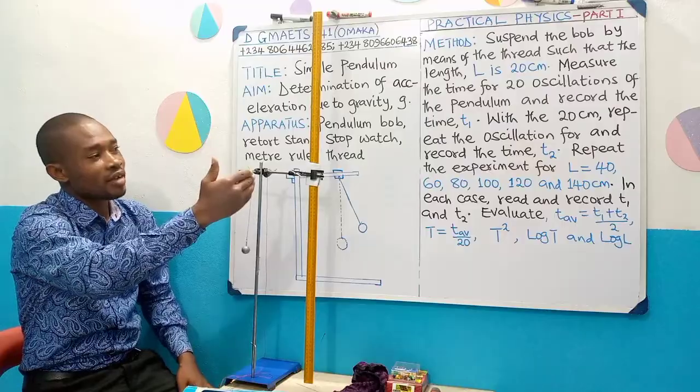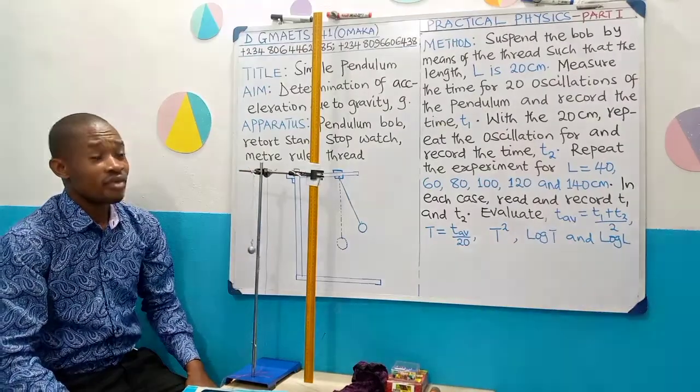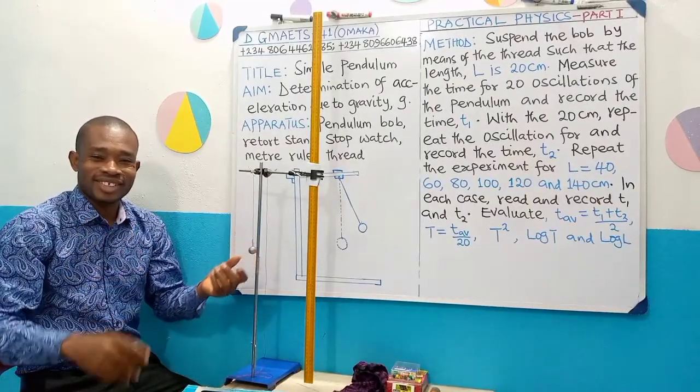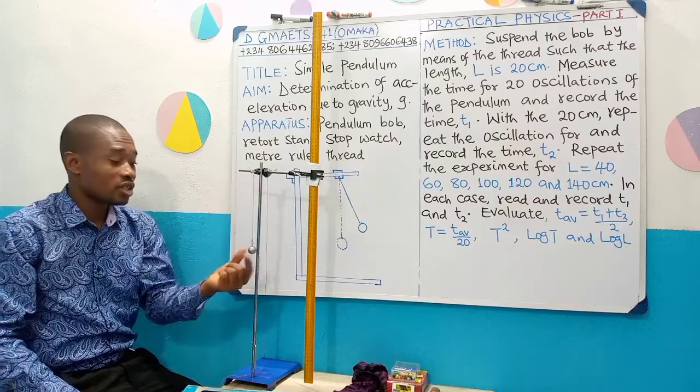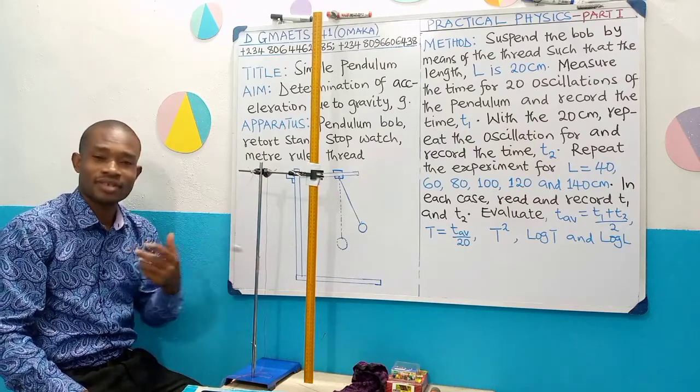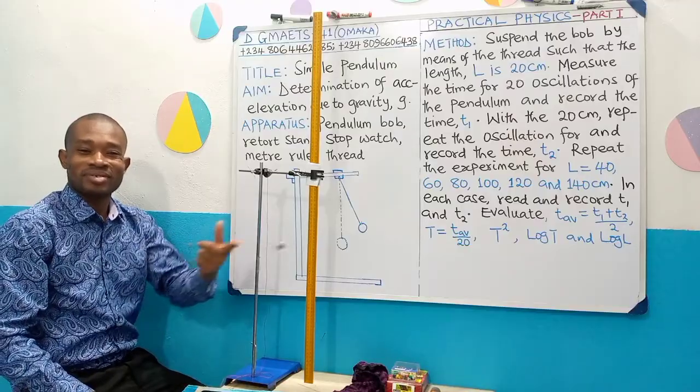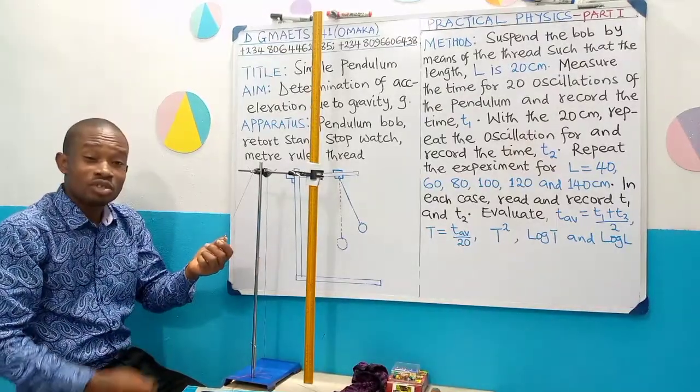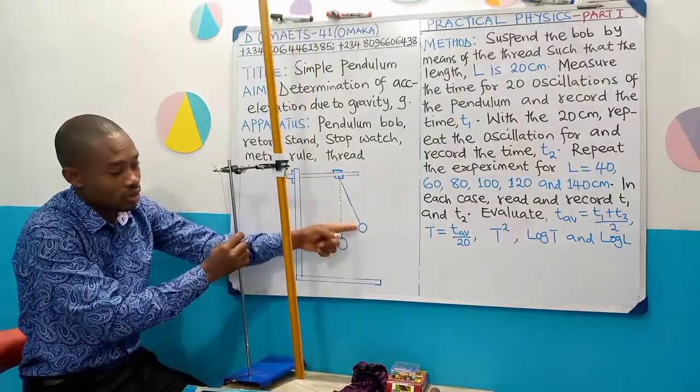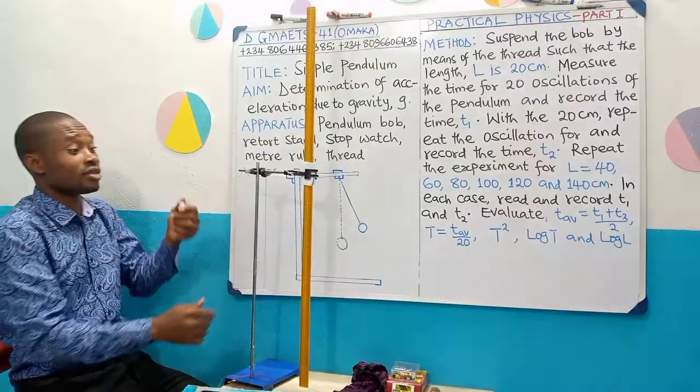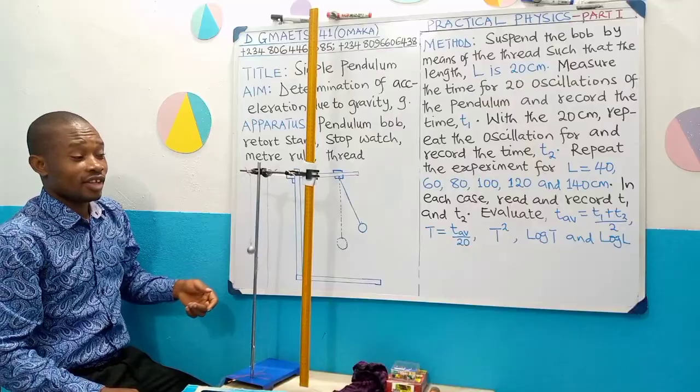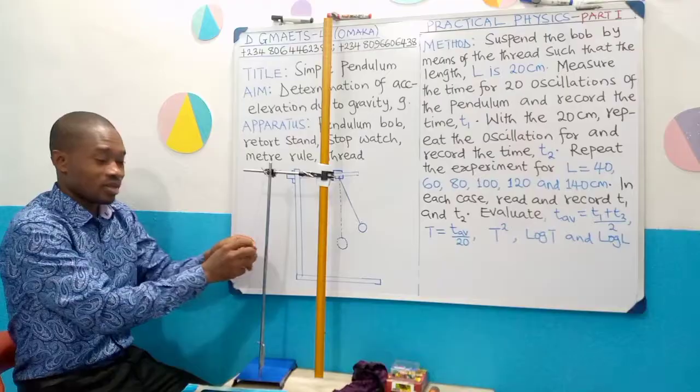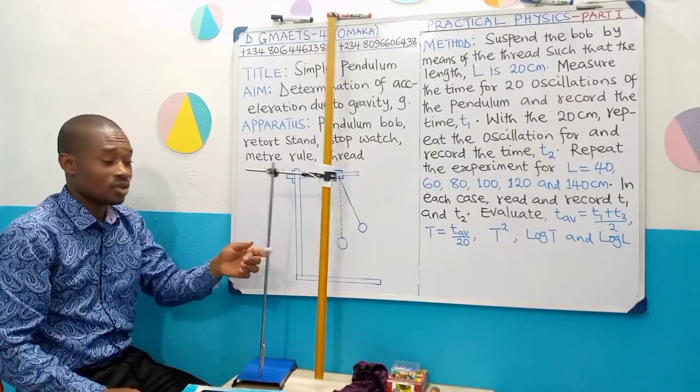We are to measure the time for 20 oscillations of the pendulum and then record the time to be T1. For us to measure that time for 20 oscillations, it means we will set this pendulum to oscillate. Oscillation is a to and fro movement, just like when you are swinging. Then when we displace it through a small angle, you pull it through a small angle, not a large angle. So don't do something like this and then you leave, it will be wobbly. Just a small angle, then you leave and allow it to oscillate.